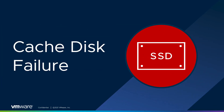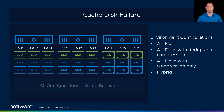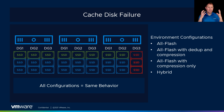The last topic for this video will be failure scenarios. We'll talk about two different types. The first is a cache disk failure. Regardless of what type of configuration you run — whether it's all-flash, all-flash with deduplication and compression, all-flash with compression only, or hybrid — the results are the same. If a cache disk fails, we lose the entire disk group. Think of the cache disk like the head of a snake: all the data passes through it. If we lose that head, everything behind it we also lose. This is where vSAN storage policies come into play — how it protects and heals your data.